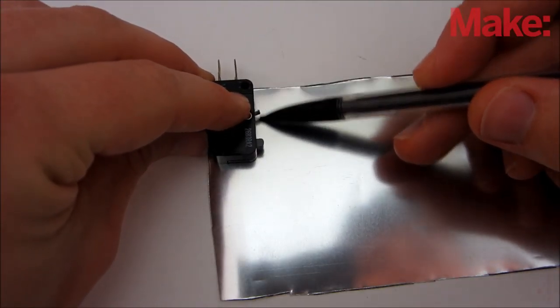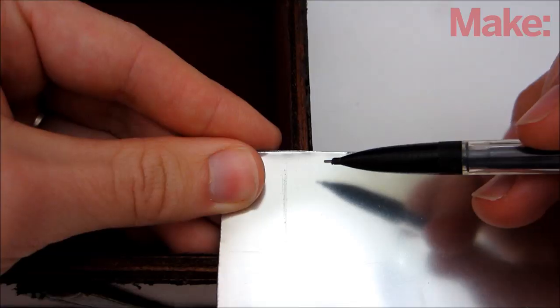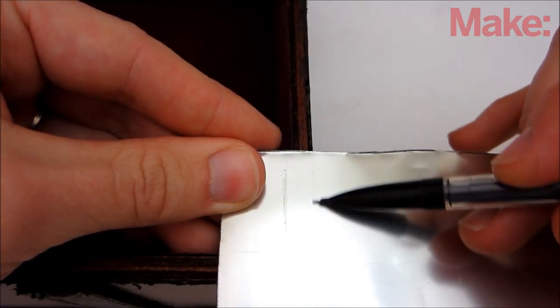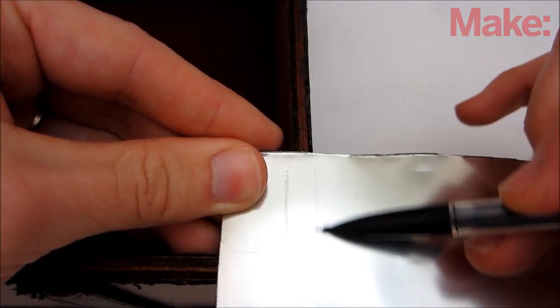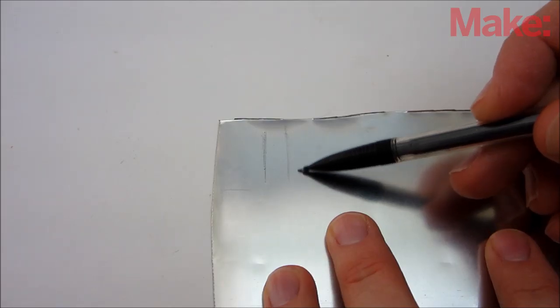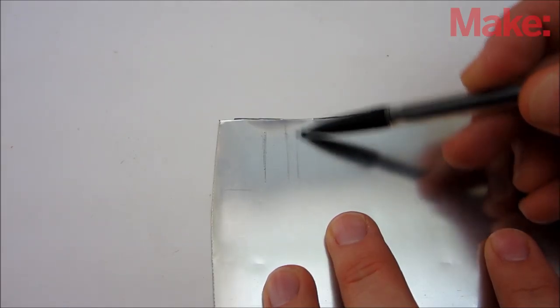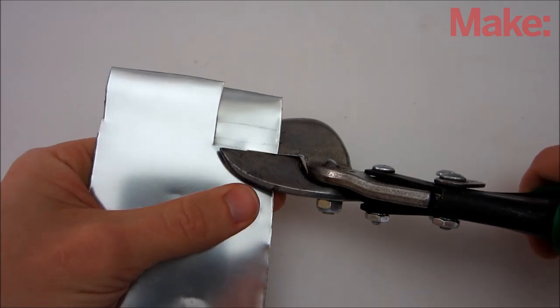First, I traced the outline of the switch onto the metal. On the side where the button sticks out, I marked off another section that was as wide as the side of the box. Then I marked off one more section that was a quarter inch wide, and I cut out the whole piece with tin snips.